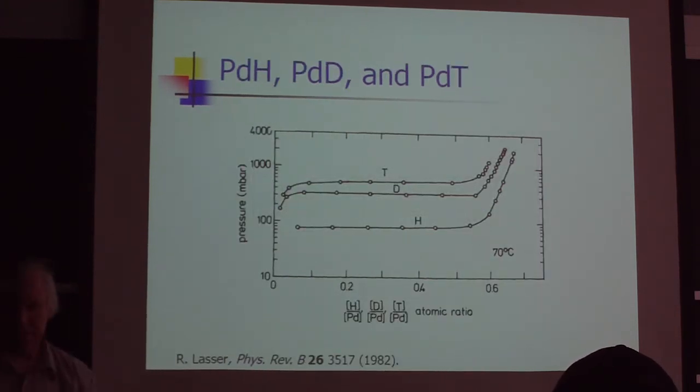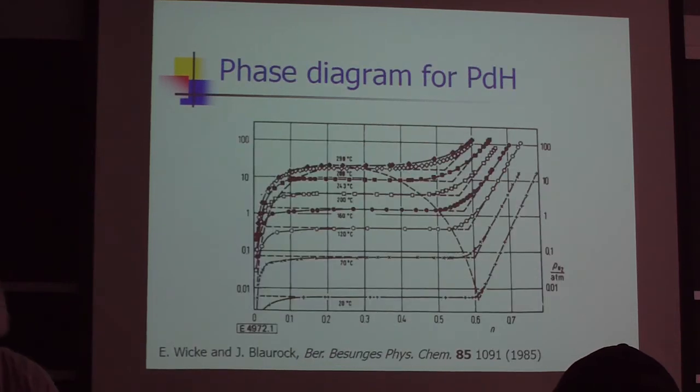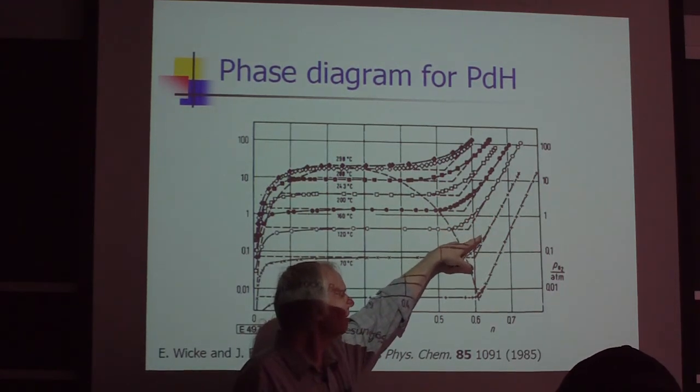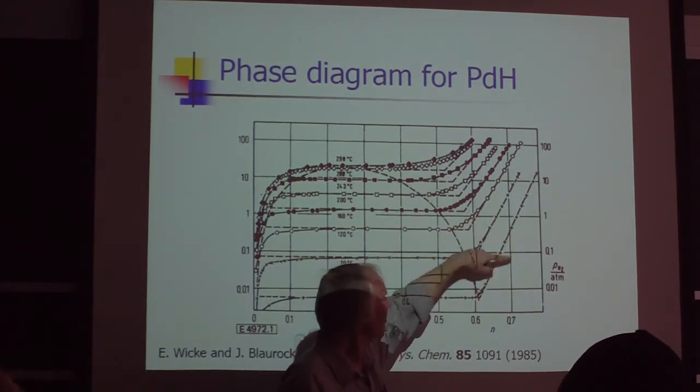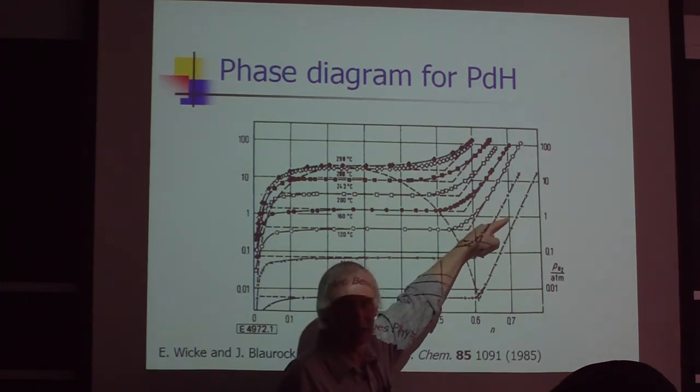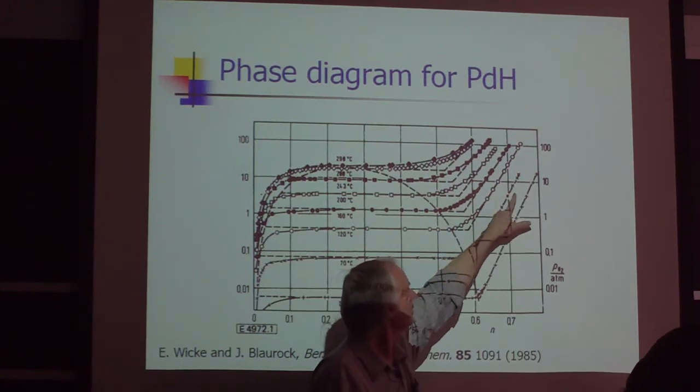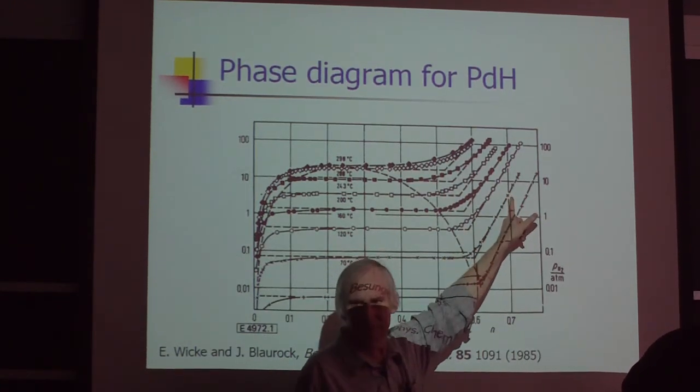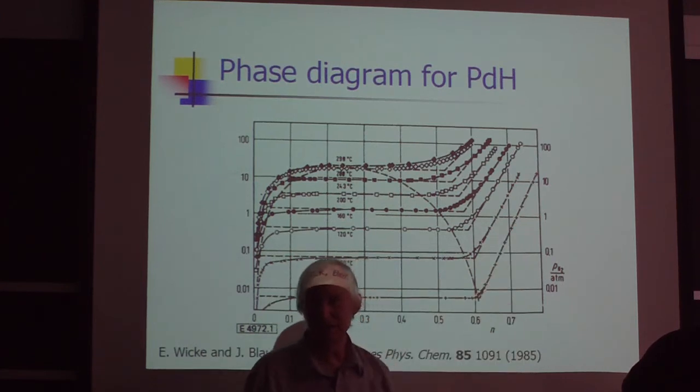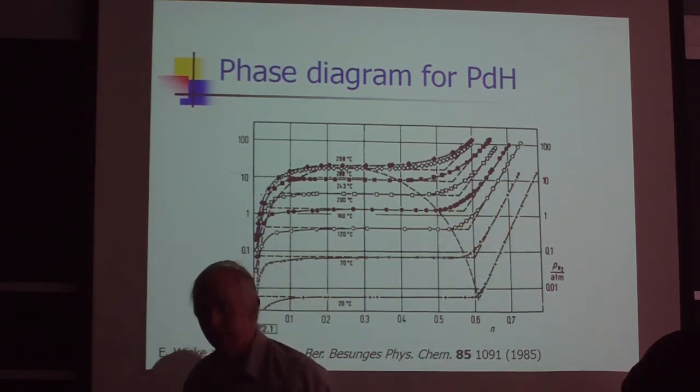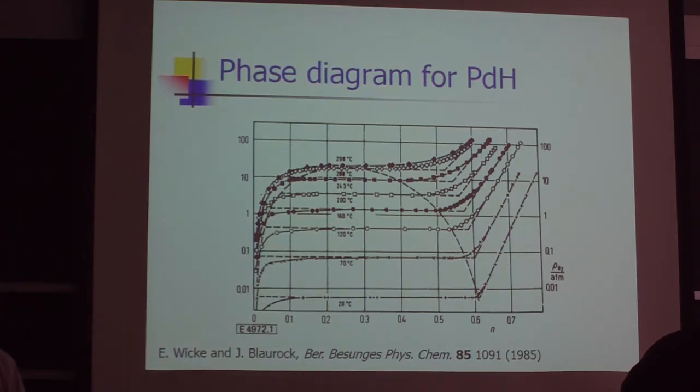And higher temperatures push the curves up, so you have to work harder. If you can get to 0.7 loading at room temperature, at 70°C you need three or four atmospheres for the same loading. At even higher temperature, you need much more pressure. So it's much harder to load at elevated temperature.